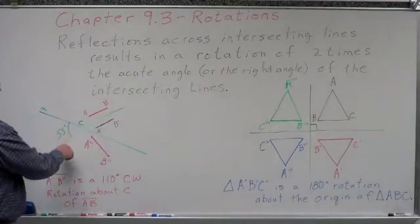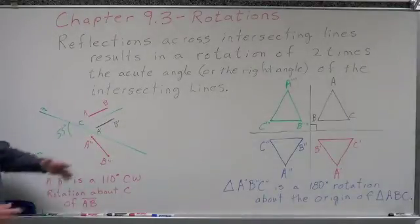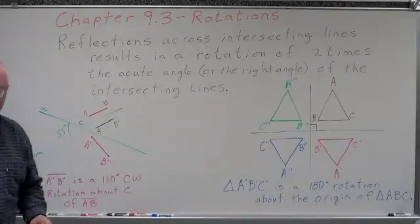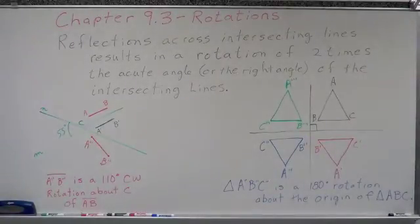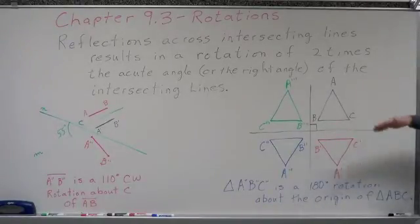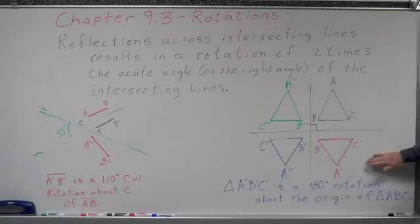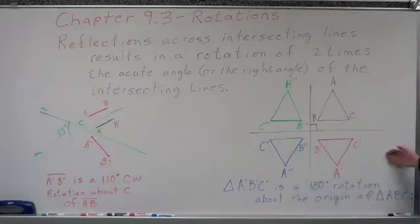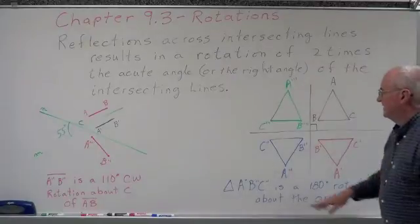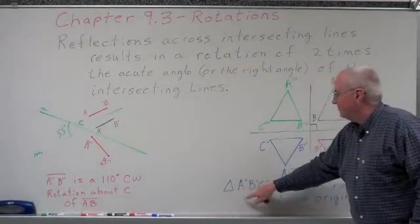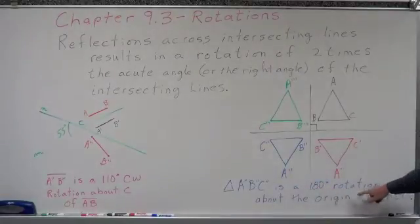Now if we were to reflect over the other side, it would be a counterclockwise direction instead of clockwise. Let's take this and put it on the coordinate grid and do it at 90 degrees. We have the original triangle ABC on a coordinate grid. The axes are at right angles. We're going to flip it across the X axis — we get A prime, B prime, C prime. Then flip it across the Y axis. We've now flipped across two intersecting lines. The result is triangle A double prime, B double prime, C double prime, which is a 180-degree rotation about the origin of triangle ABC.